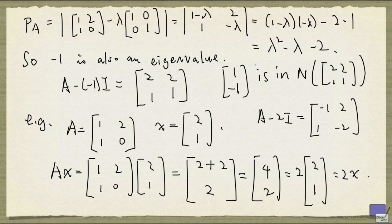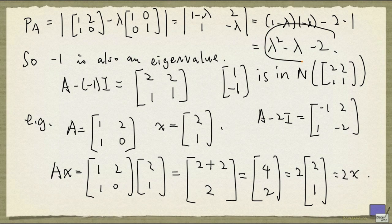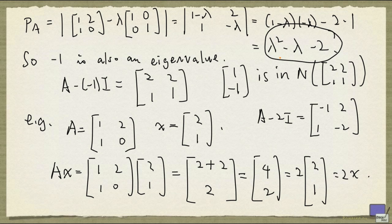Notice that there can be no other eigenvalues for A, because if you look at this characteristic polynomial, it's of degree 2. And so there can be no more than two distinct eigenvalues. And we have found two of them, namely 2 and minus 1. So those are all the possible eigenvalues for A.